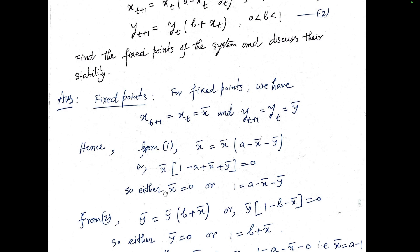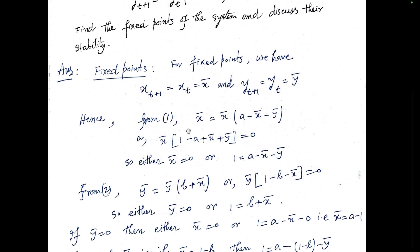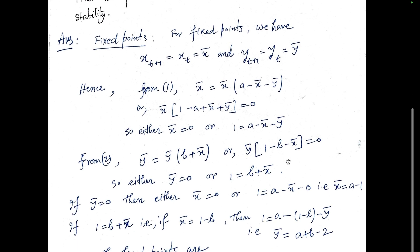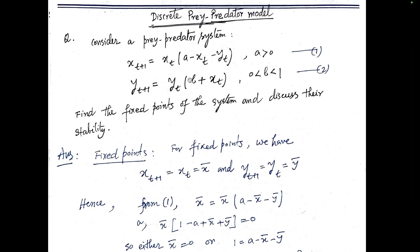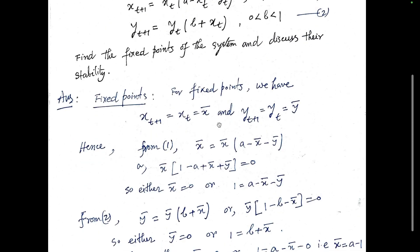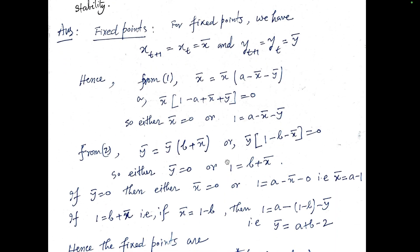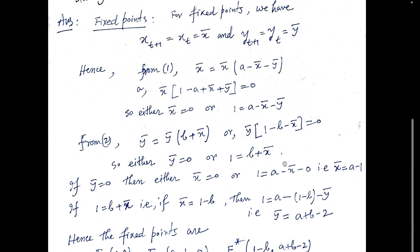So either x̄ = 0 or 1 = a - x̄ - ȳ. From equation two, ȳ = ȳ[b + x̄], so taking ȳ common we get ȳ[1 - b - x̄] = 0. Therefore either ȳ = 0 or 1 = b + x̄.